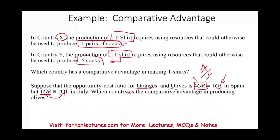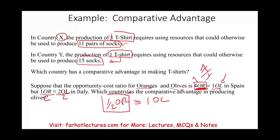In Spain, producing 1 ton of olives costs 4 tons of oranges. In Italy, the ratio is 1 orange to 2 olives — dividing both sides by 2, it costs only half a ton of oranges to produce 1 ton of olives. Italy has a much lower opportunity cost for olives.